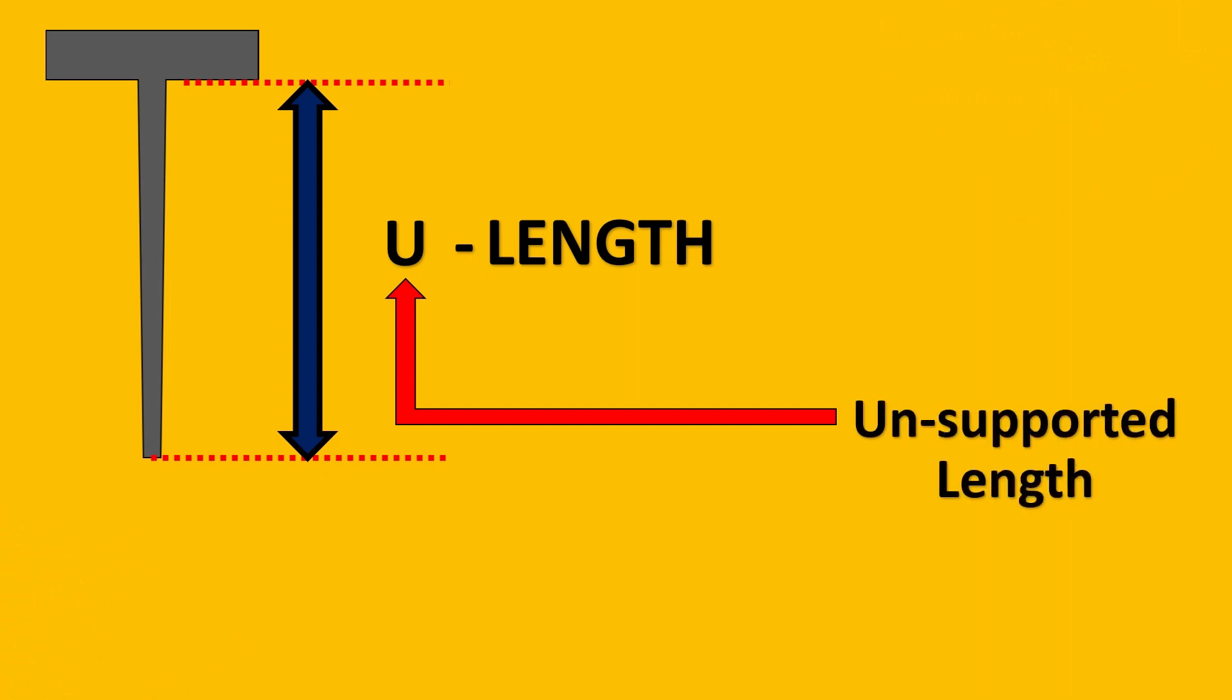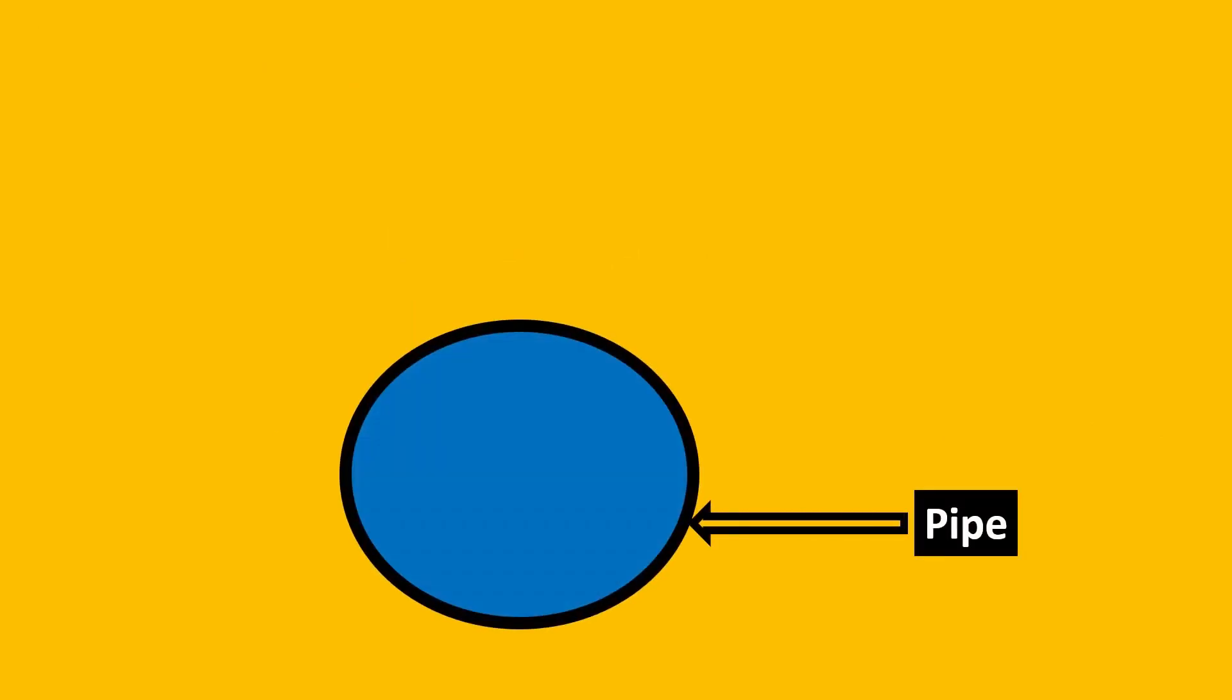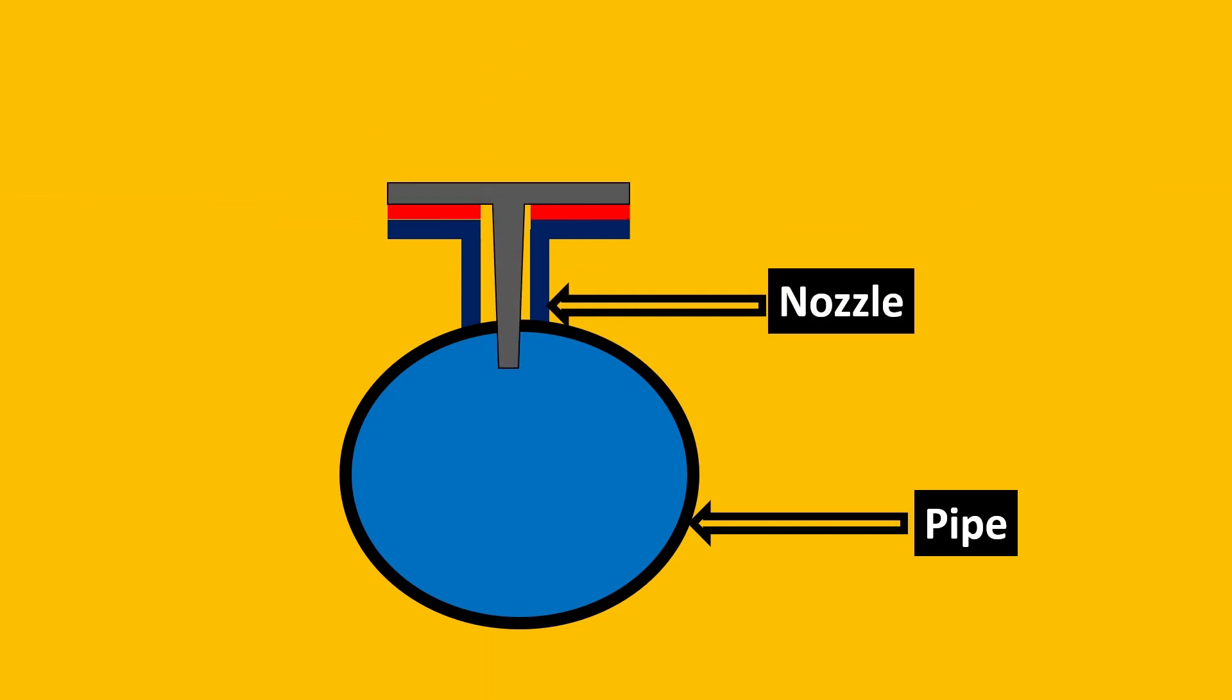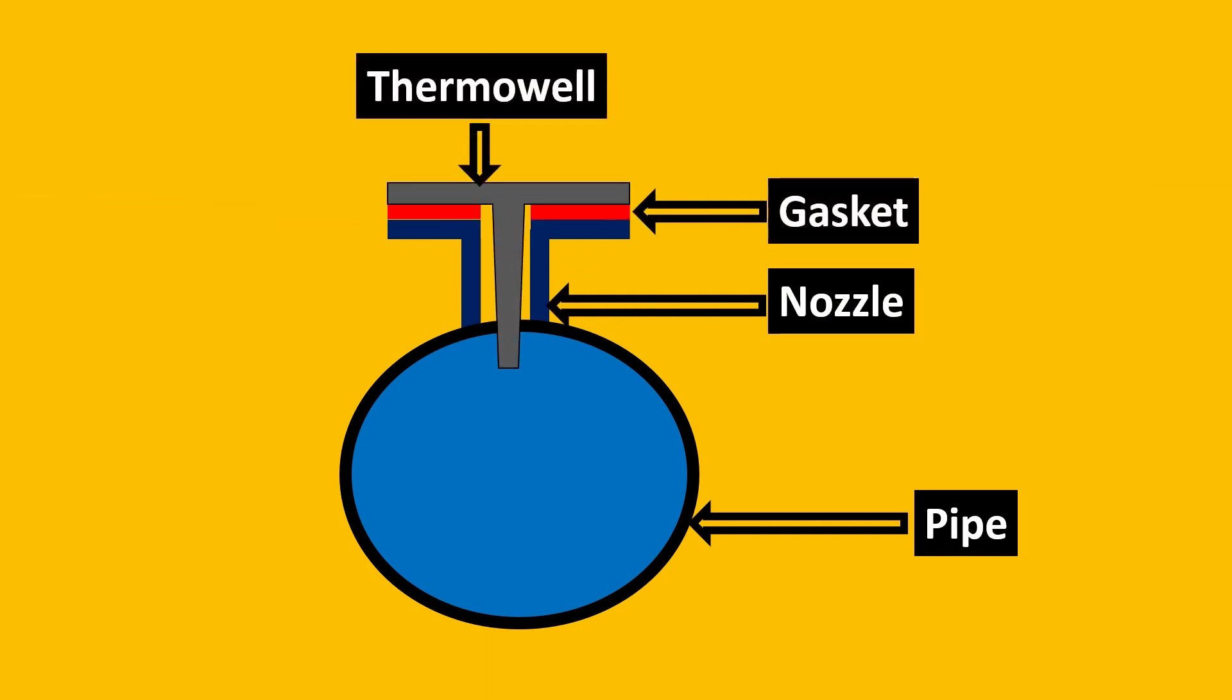Now let us look at how to calculate this length. First thing to know is how a thermowell is actually installed inside a pipe. So here is your pipe, here is your nozzle, and the thermowell is inserted here with the help of a gasket. This entire assembly has to be in place so we put bolts together with studs so that the entire assembly is in place.